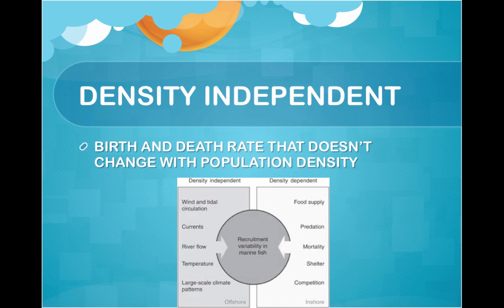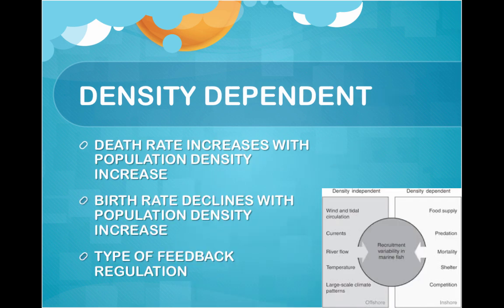Birth rates and death rates that don't change with population density are density-independent. When death rate rises with population density, or when birth rates drop with rising population density, you have density-dependent regulation. This is a type of feedback regulation.